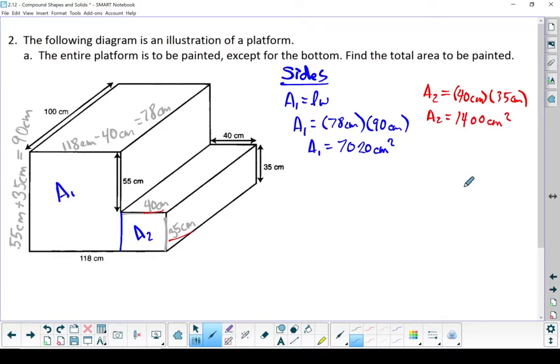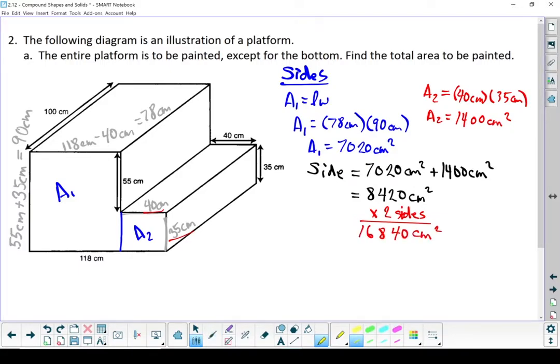To finish this off, the total area of each side, we're going to add those two areas together. So 7020 centimeters squared plus 1400 centimeters squared gives me a grand total of 8420 square centimeters. We also can't forget that there are two sides like that. Let's times this by two sides. So my sides in total are 16,840 square centimeters. Let's put a box around that because we are going to need to come back for that number.